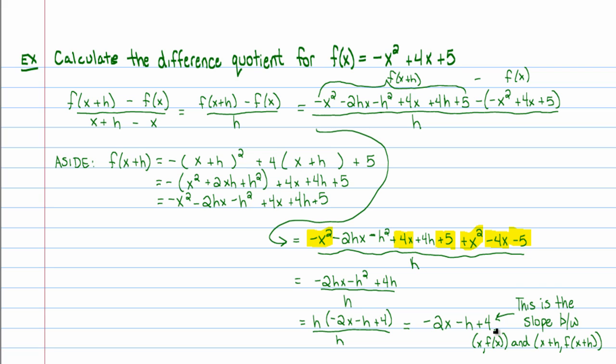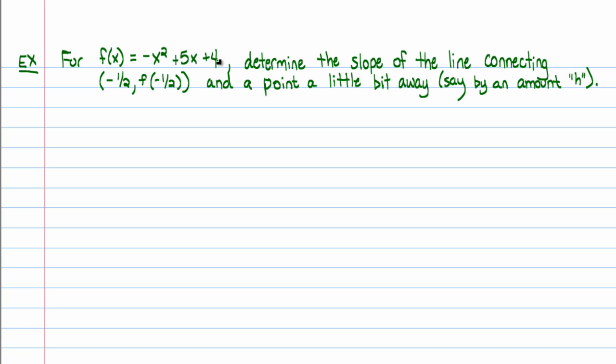So what if we were to maybe look at a specific value of x here? Like for example, a negative 1 half. So for f of x being the same function, let's go ahead and determine the slope of the line connecting x equals negative 1 half, y equals f of negative 1 half. And a point a little bit away from that. Okay, say by an amount h. So in other words, some point x plus h. And of course, the y value will be f of x plus h.